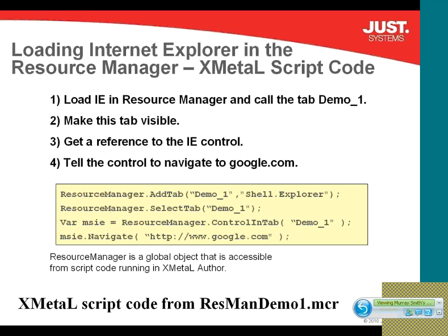Here it is — there are only a few lines of code; it doesn't take much to load a page in the resource manager. The first thing we do is load Internet Explorer and give the tab a name — we call it demo1. When adding the tab, we give it the name and the second argument is the name of the ActiveX control, which for Internet Explorer is called shell.explorer. The next line makes the tab the active one. Then we get a reference to the Internet Explorer ActiveX control so we can invoke its methods, like the navigate call which tells Internet Explorer to navigate to a certain page. This script is running in the XModon script engine.